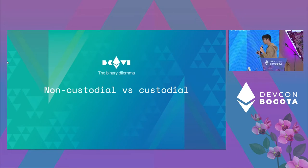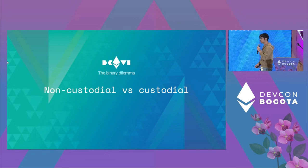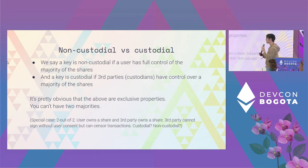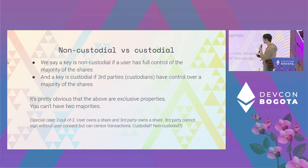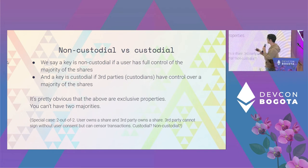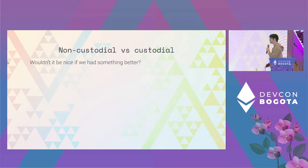The crux of the problem is a binary dilemma between non-custodiality and custodiality. A key is non-custodial if the user controls the majority of shares — say two out of three — so no other person can control the key. A key is custodial if third parties called custodians control the majority of shares. These are exclusive properties: you can't have two majorities, so you either get non-custodiality or full custodiality.